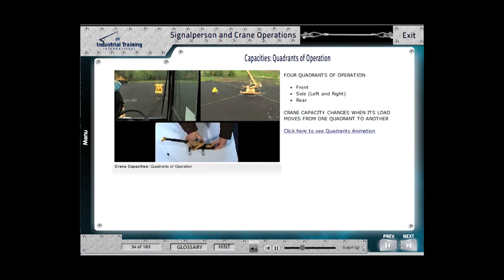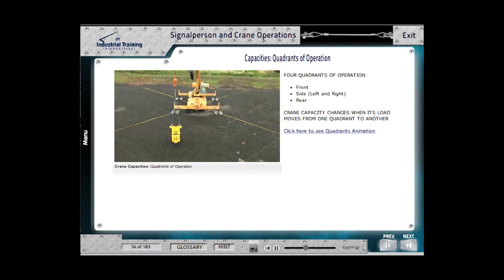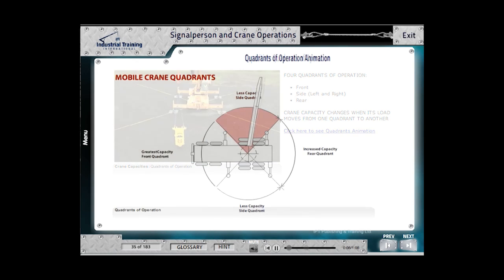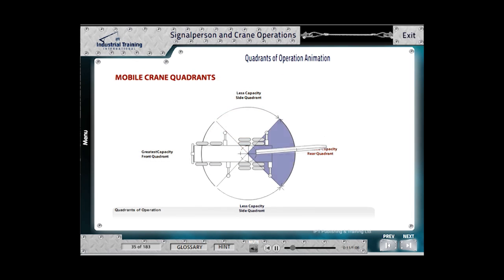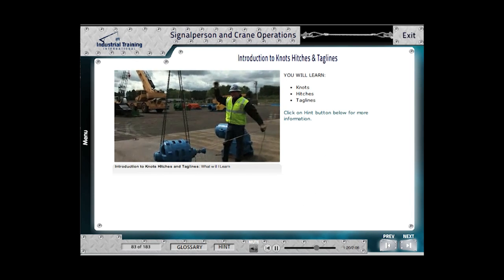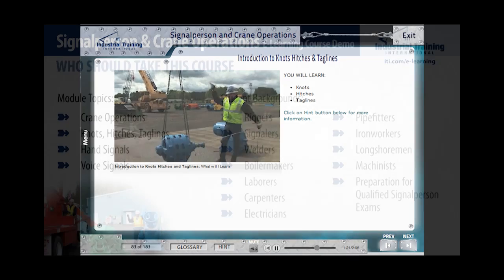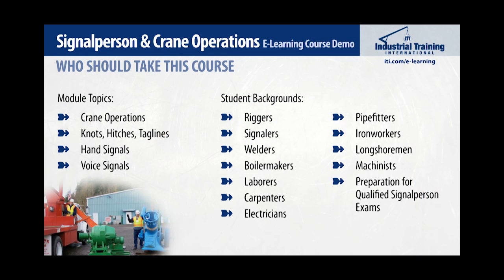As you learned about what makes up the modules in this course, it's evident that the course is intended for beginners in rigging. Students come from a variety of backgrounds, as well as those who would like to gain qualified or certified signal person status through a nationally accredited or third-party agency. This course is excellent preparation for successfully passing the exams.